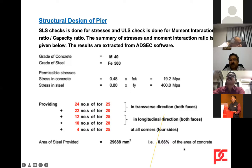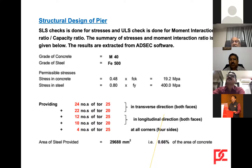The minimum steel per IRC 112 is 0.4%. We have used 0.66%, which exceeds the minimum. In buildings per IS456, the minimum is 0.8% and commonly 3% is used, up to a maximum of 4%. In bridge piers, we rarely use more than 1.5% steel. The arrangement of different bar diameters is mapped in the ADSEC software, which accounts for actual positions of each reinforcement bar.